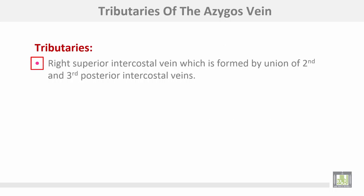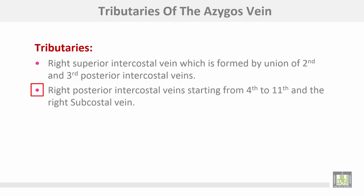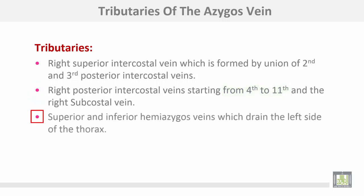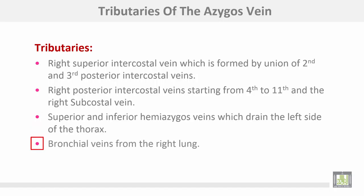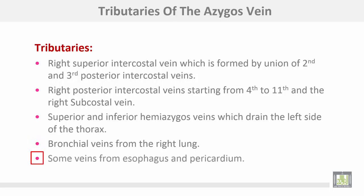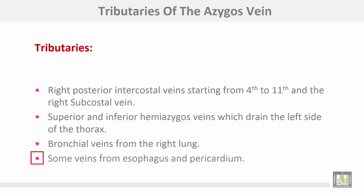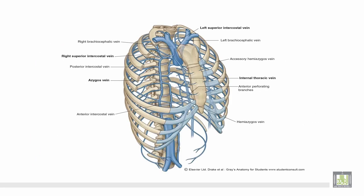The tributaries of the azygous vein: number one, the right superior intercostal vein, which is formed by union between the second and third posterior intercostal veins. Number two, right posterior intercostal veins from the fourth to eleventh, and the right subcostal vein. Then the superior and inferior hemi-azygous veins, which drain the left side of the thorax. Then bronchial veins from the right lung, and some veins from the esophagus and pericardium.